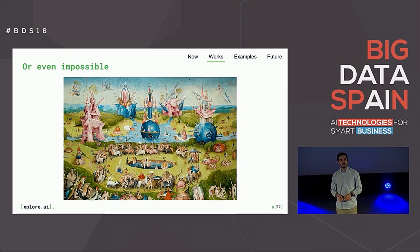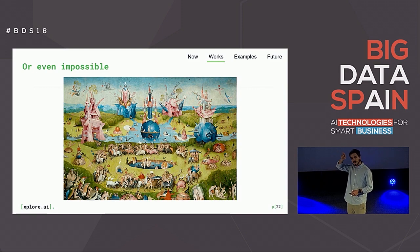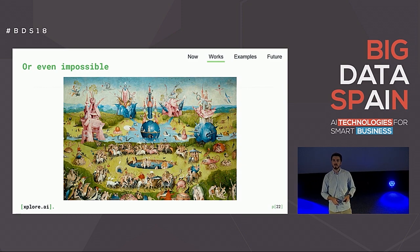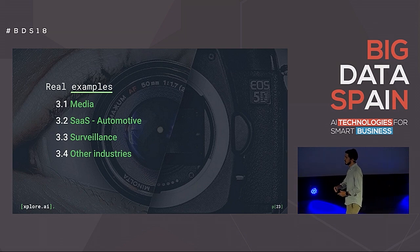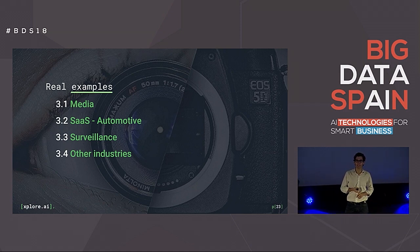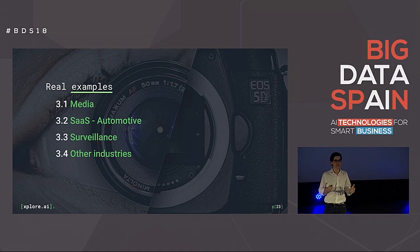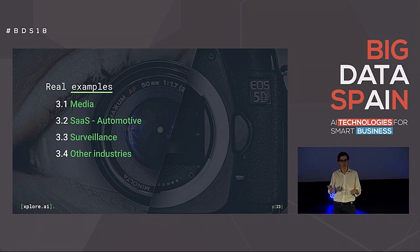The takeaway is that we should not expect the computer to output something we cannot teach it. We cannot label something if we have no clue about what it represents. Let's look at some real examples across industries: media, software as a service with things we have done and our learnings, surveillance as a reflection on what could happen, and other industries.